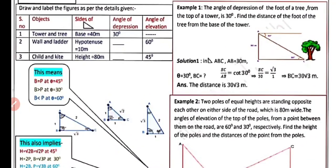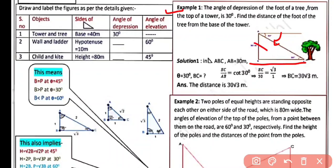Example 1: The angle of depression of the foot of a tree from the top of a tower is 30°. Find the distance of the foot of the tree from the base of the tower, given the height of the tower is 30 meters. In triangle ABC, using BC/AB = cot 30° = √3/1, we get BC = 30√3 meters. Thus the distance between the foot of the tree and the tower is 30√3 meters.